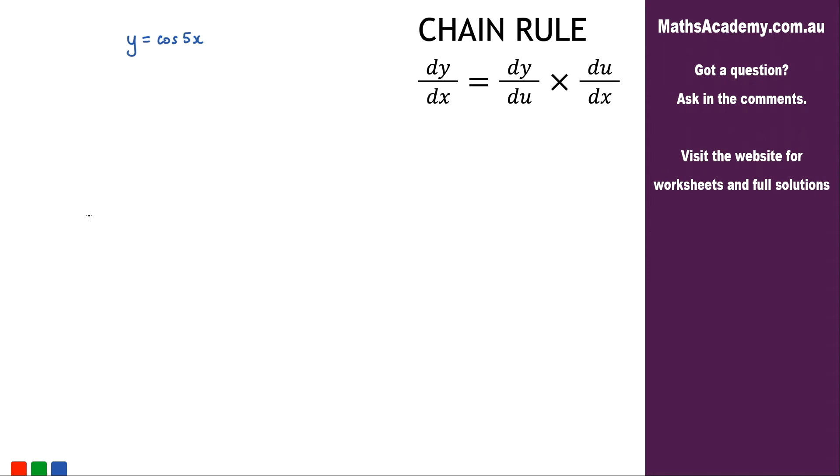For today's lesson we're asked to differentiate y equals cosine of 5x. You can see we're going to be using the chain rule. So let's go ahead and make the substitution.